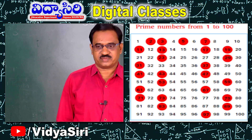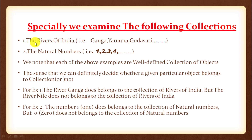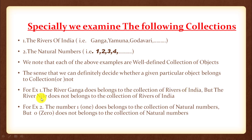We examine the following collections: number one, the rivers of India — Ganga, Yamuna, Godavari; number two, the natural numbers — 1, 2, 3, 4, etc. Each of these examples are well-defined collections of objects, in the sense that we can definitely decide whether a given object belongs to the collection or not. The river Ganga belongs to the collection of rivers of India, but the Nile does not. The number 1 belongs to the natural numbers, but zero does not.